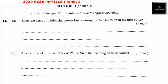This is Section B, which carries 55 marks. Answer all the questions in the spaces provided. Question number 14a: state two ways of minimizing power losses during the transmission of electric power.